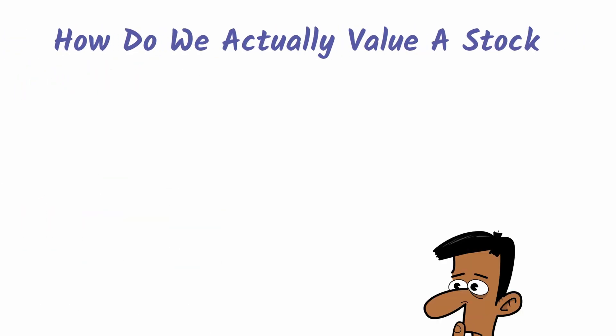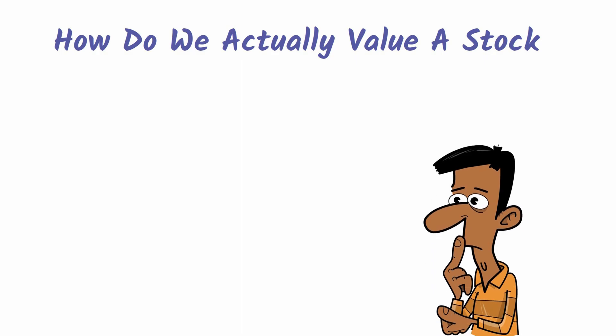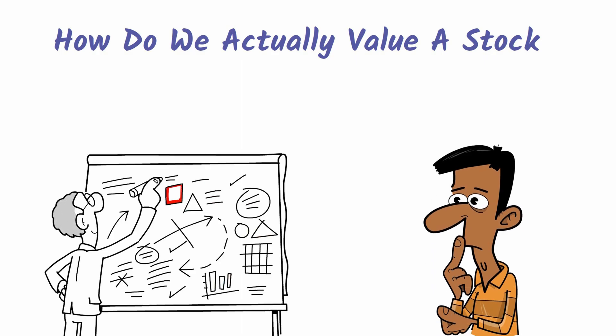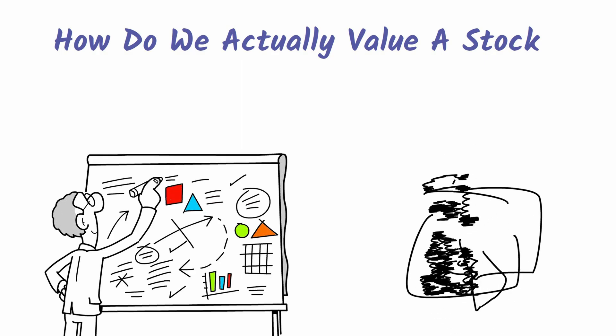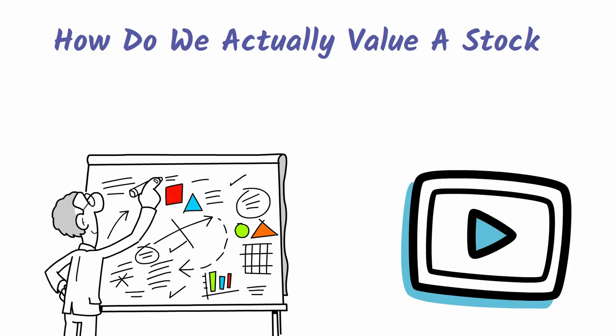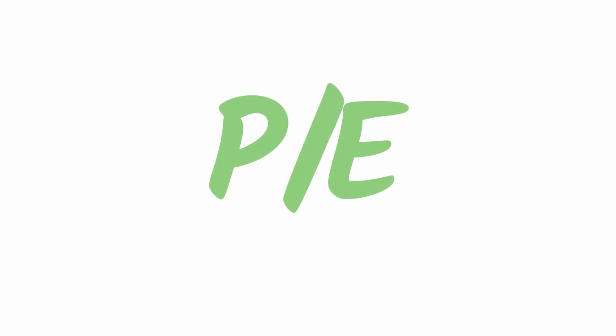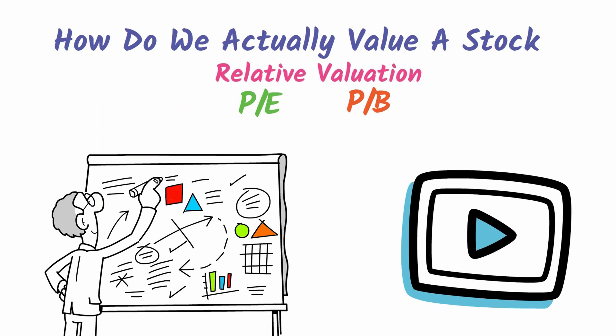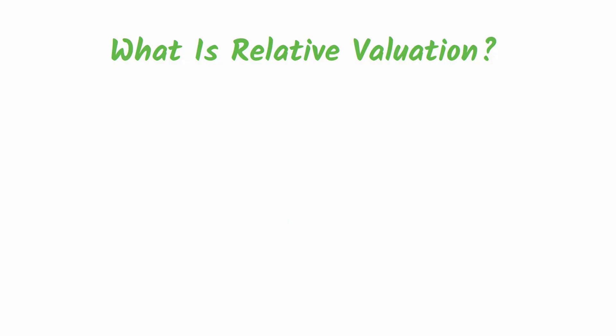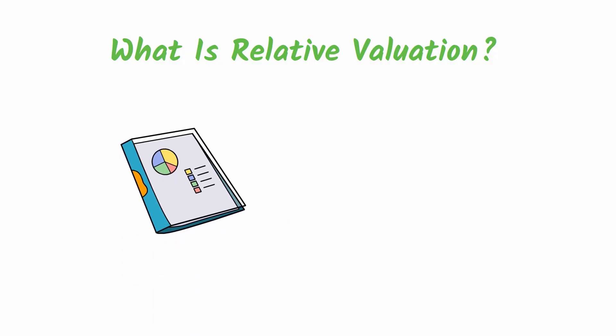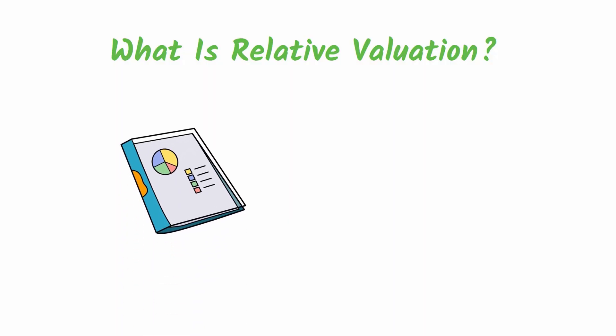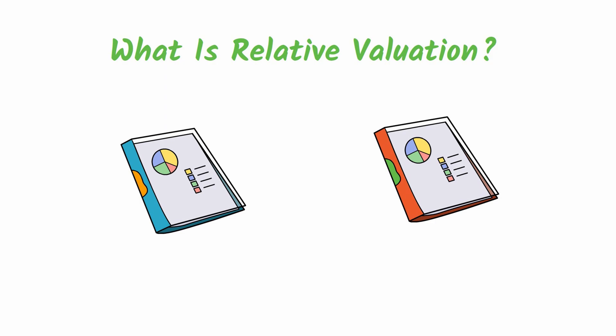So how do we actually value a stock? There are quite a few ways, but in this video I'll just be showing you one of the easier routes, which is the PE and PB relative valuation. Relative valuation simply means comparing an asset to a similar or comparable asset within the industry.